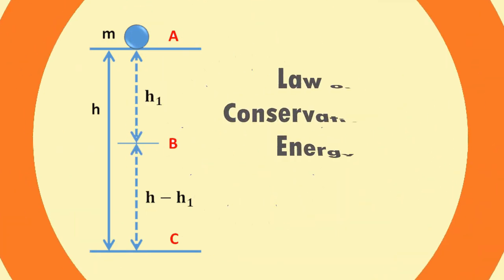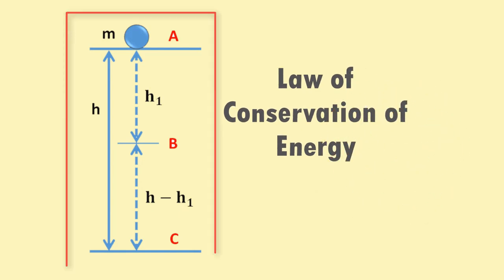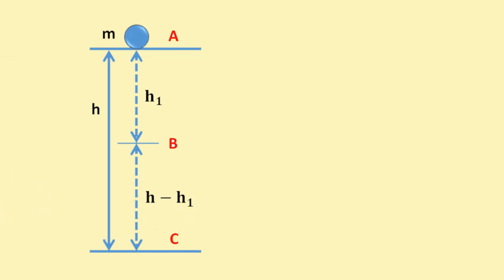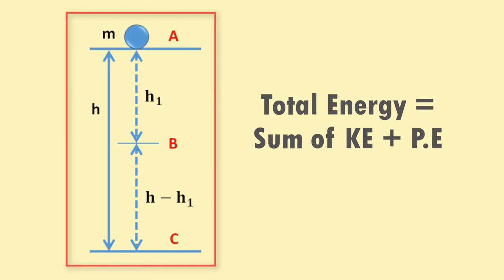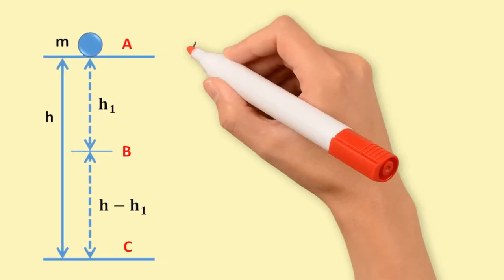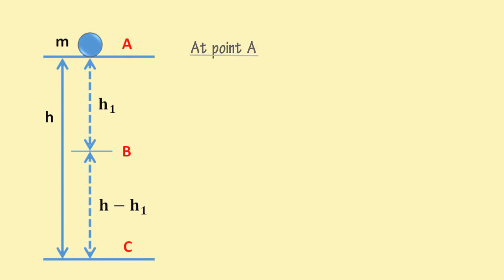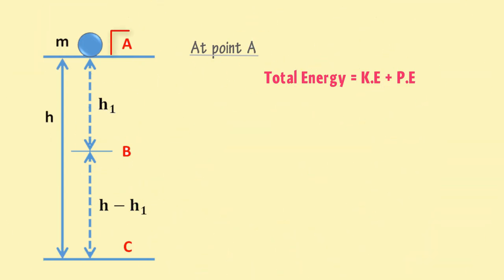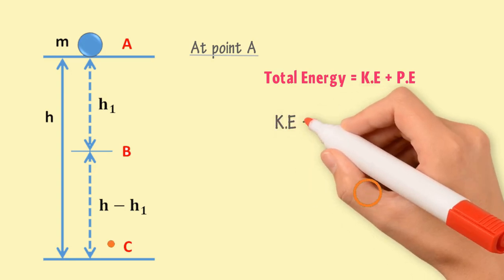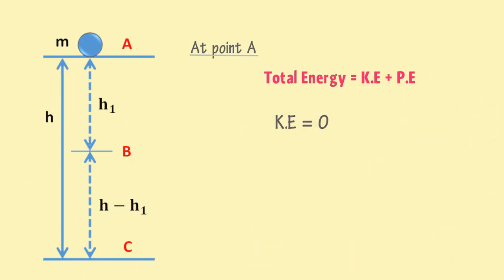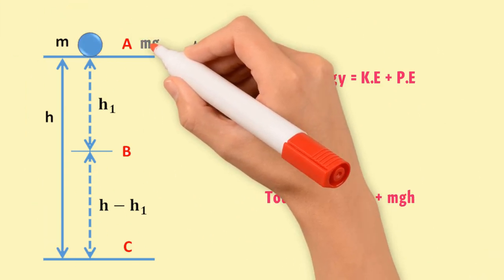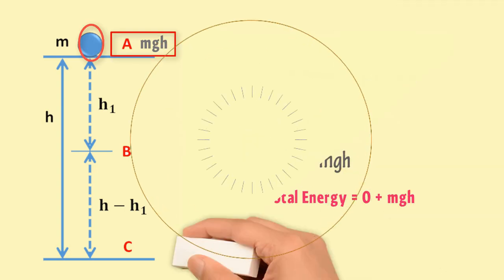According to the law of conservation of energy, the total energy of the system remains constant. Here, the total energy is the sum of kinetic energy and potential energy. At point A, the total energy is kinetic energy plus potential energy. Since the ball is at rest at A, its kinetic energy is zero, while the potential energy is MGH. Hence, the total energy of the ball at point A is MGH.